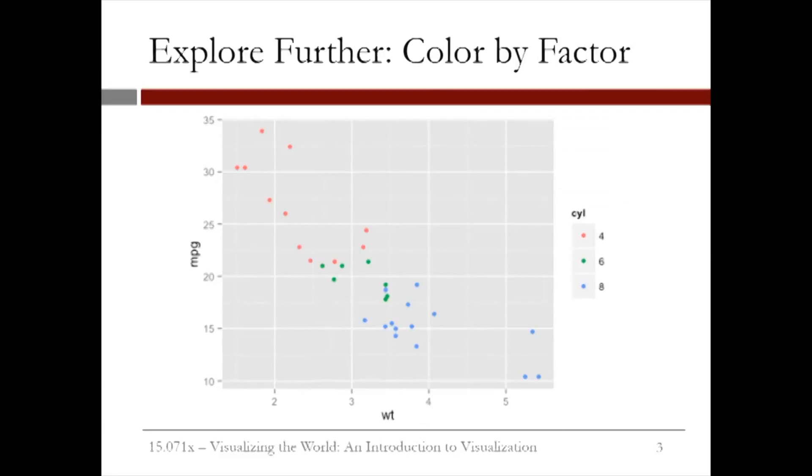The same graph, but now colors of the points signify the number of cylinders in the car: 4 for red, 6 for green and 8 in blue.